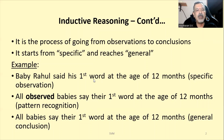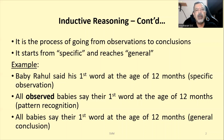For example, someone observed that baby Rahul said his first word at the age of 12 months — a specific observation about a particular baby. The same researcher then found that all the babies he observed also said their first word at the age of 12 months, recognizing a pattern. So the general conclusion is that all babies say their first word at 12 months. There are also videos available on mathematical induction linked in the description below.